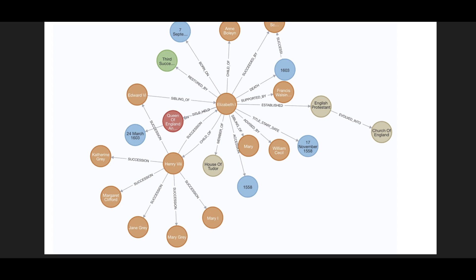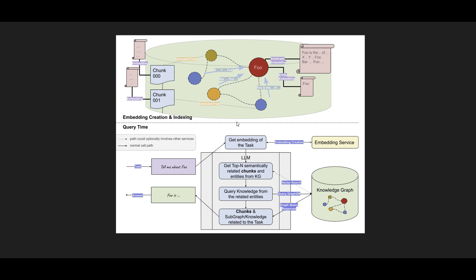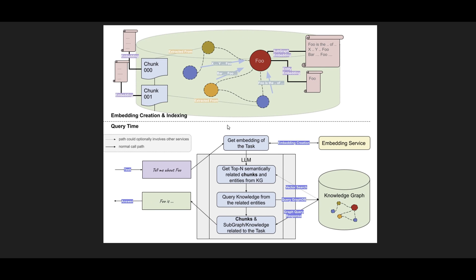Now the question is: if I don't have graph knowledge, how should I create one? There are mainly two different approaches for graph RAG. The first one, as you can see, uses word embeddings with graph knowledge. In simple RAG, we chunk our data and generate embeddings for chunk 0, chunk 1, chunk 2, and so on.